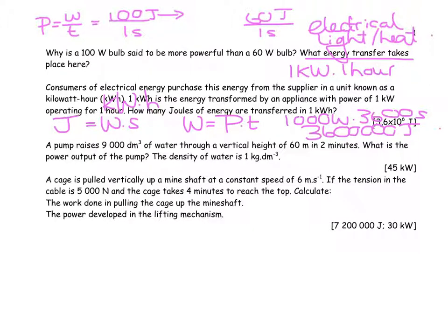A pump raises 9,000 decimeters cubed of water through a certain height in two minutes. What is the power output of the pump? The density of water is 1 kilogram per decimeter cubed. So then I can get a mass by saying density equals mass divided by volume. And if you didn't know that, kilograms divided by decimeters cubed would give you a hint. Therefore, mass equals density times volume, which is 1 times 9,000. So the mass of this particular pile of water is going to be 9,000 kilograms.